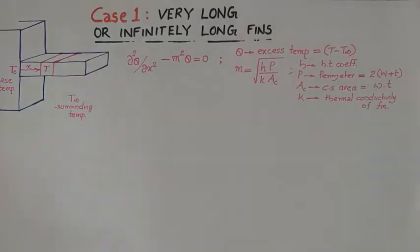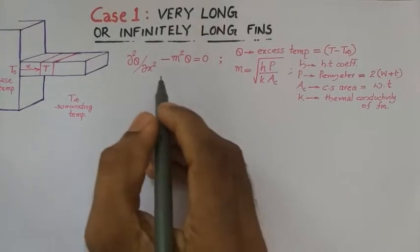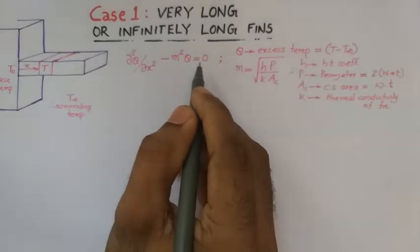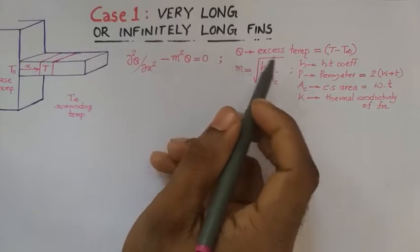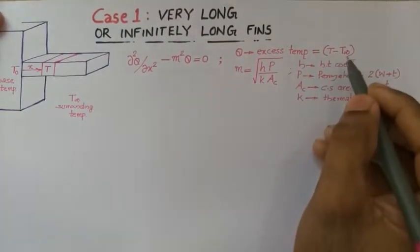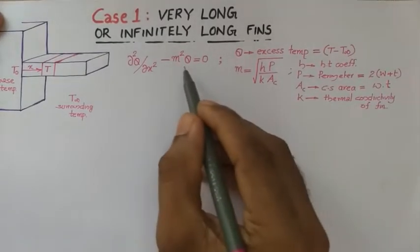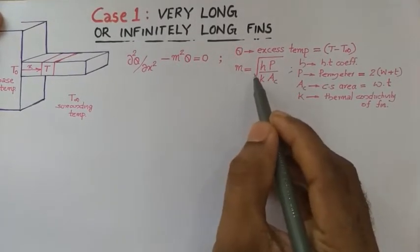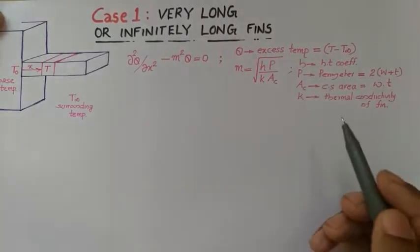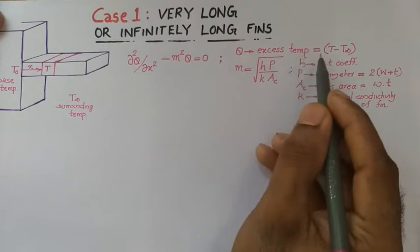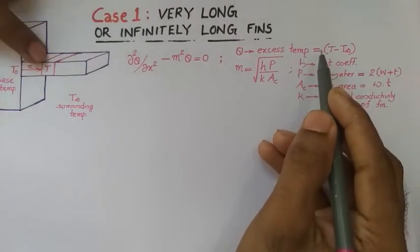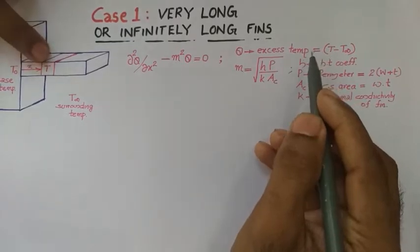In today's class, the general governing equation for fins is derived, which is d²θ/dx² minus m²θ equal to 0. Theta is the excess temperature variable defined as t minus t-infinity, and each term in the variable m is explained here. The excess temperature theta is the actual temperature t required at any distance x from the base temperature.